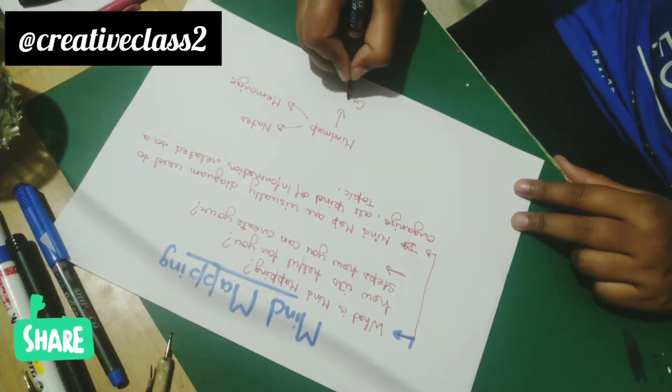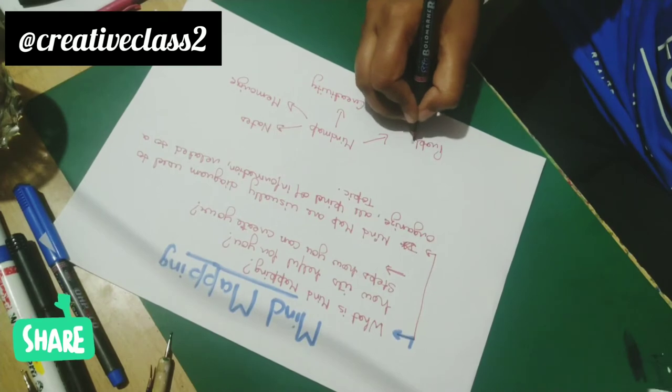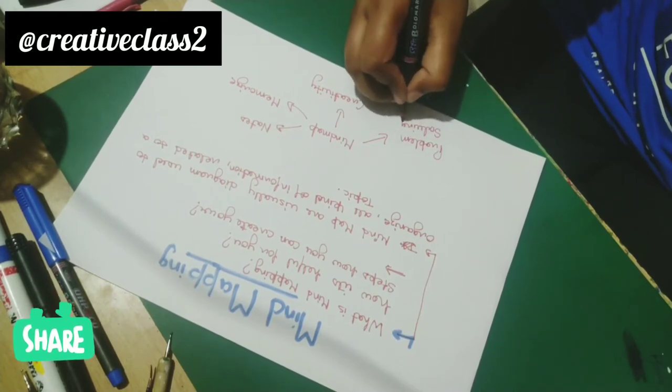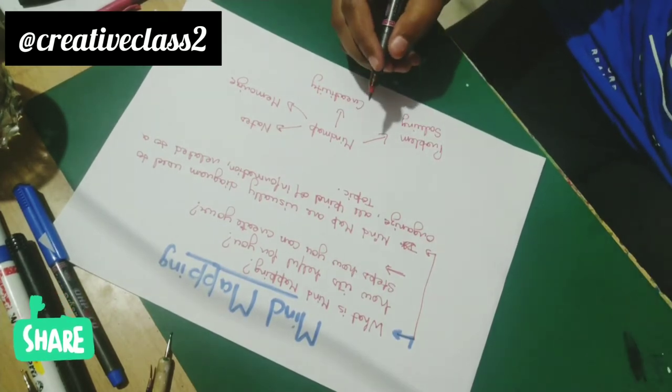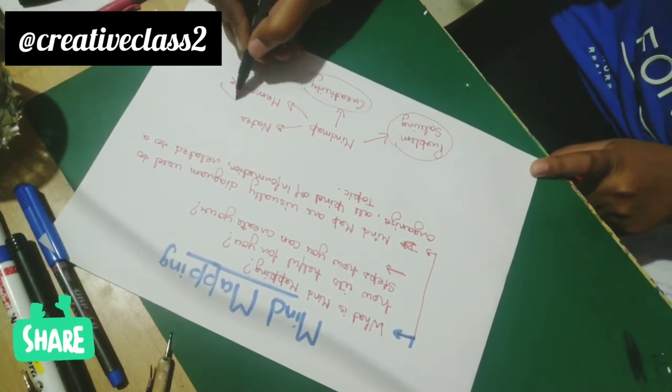Write down your topic in the center or draw an image related to it. Now draw main branches from the center which further can divide into sub-branches. Now we'll see the example.